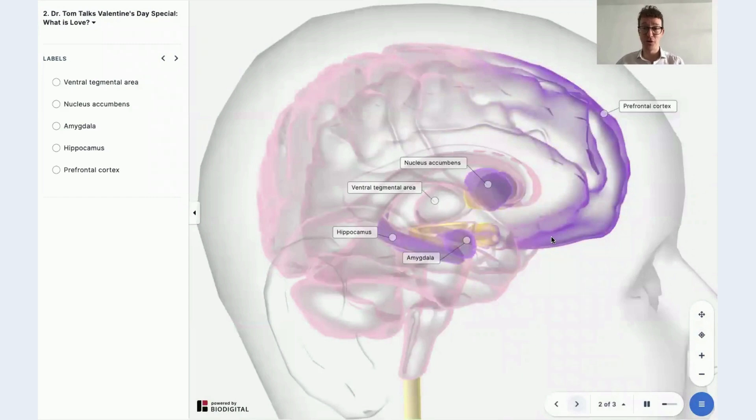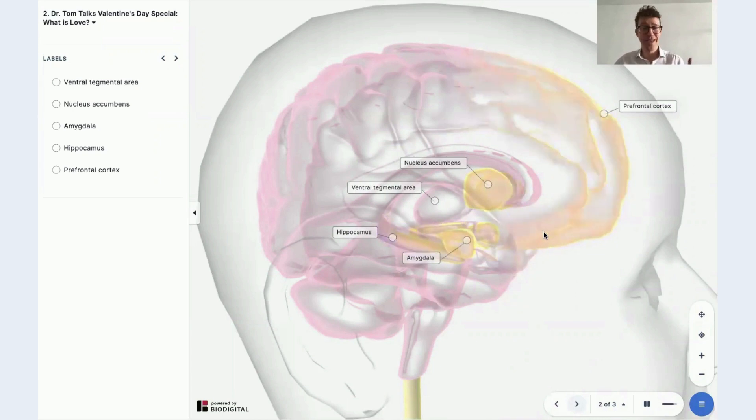So this is the mesolimbic area. Before I start, I'm not going to completely demystify love. It's still not completely understood. So fear not, you will still have some mystery left by the time that this is over.